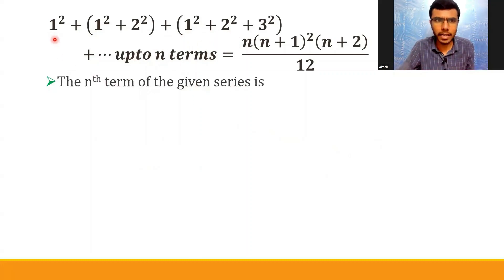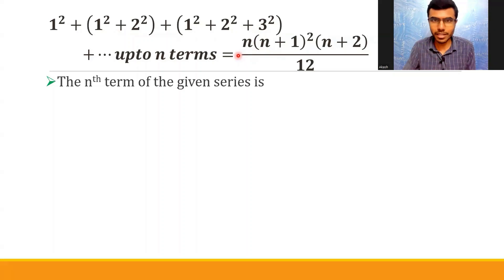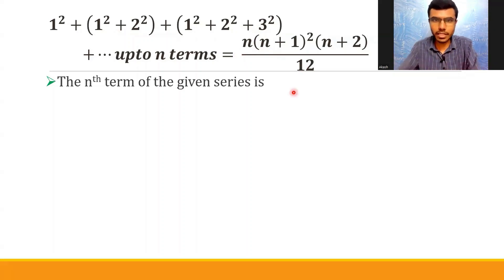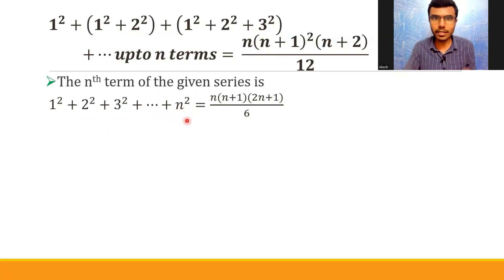If you observe, there is a pattern. The first term is 1², the second term is 1² + 2², the third term is 1² + 2² + 3². What would be the fourth term? 1² + 2² + 3² + 4². So the n-th term is 1² + 2² + 3² + ... + n². That's nothing but the sum of first n natural numbers squared, and there is a formula: n(n+1)(2n+1)/6.